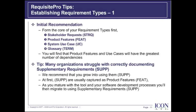Our initial recommendation is to form your core requirement types. If you're following a use-case-driven approach, we recommend starting with only four requirement types: Stakeholder Request, Product Features, System Use Case, and Glossary. Lastly, we find many organizations struggle with correctly documenting supplementary requirements. We recommend that you grow into using supplementary, or SUP, requirements. At first, SUP requirements are usually captured as product features, but as you mature with the tool and your software development process, you'll then migrate to using SUP requirement types.